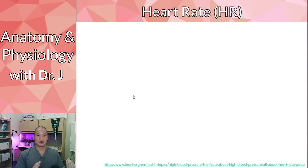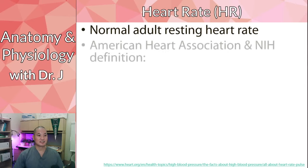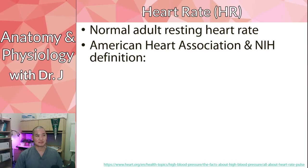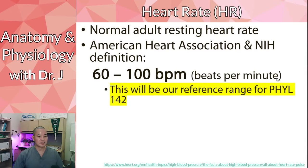Let's talk about heart rate — it is a rate, some sort of speed. What happens is it's usually something over time. A normal adult resting heart rate, according to the AHA and the NIH, and even your OpenStax textbook and Martini use this definition: it's 60 to 100 beats per minute for an adult, let's say someone over 18. This will be our reference range, so you definitely should know these values.